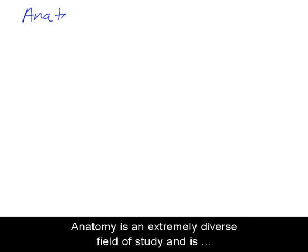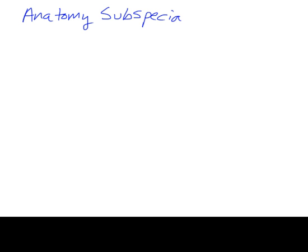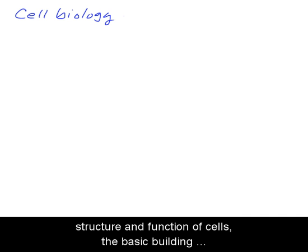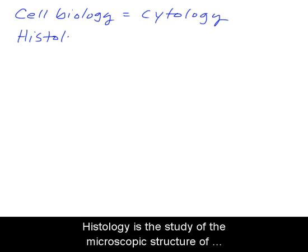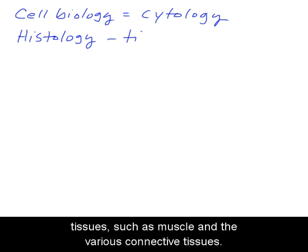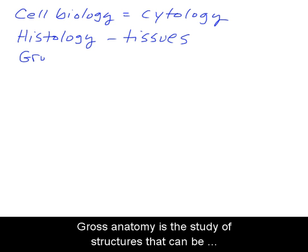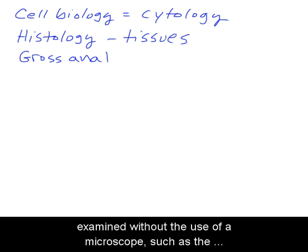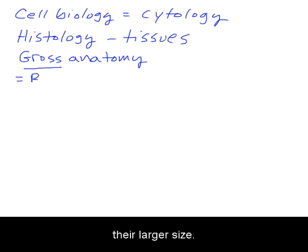Anatomy is an extremely diverse field of study and is composed of many subspecialties. Here are a few examples. Cytology is the study of the structure and function of cells, the basic building blocks of life. Histology is the study of the microscopic structure of tissues, such as muscle and the various connective tissues. Gross anatomy is the study of structures that can be examined without the use of a microscope, such as the heart or brain. The word gross refers to their larger size.